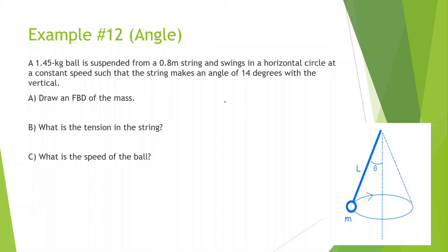Draw a free body diagram of the mass. The angle is 14 degrees, the length is 0.8 meters, and the mass is 1.45 kg. In the free body diagram, there's going to be a force of gravity going down — that's 14.5 newtons — and there's going to be a force of tension going along the wire.